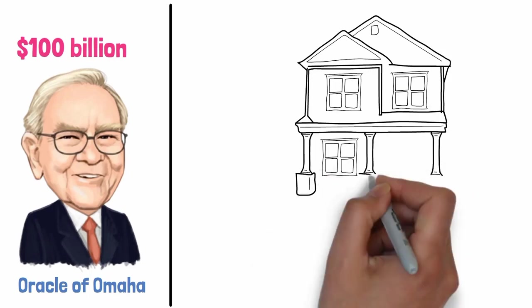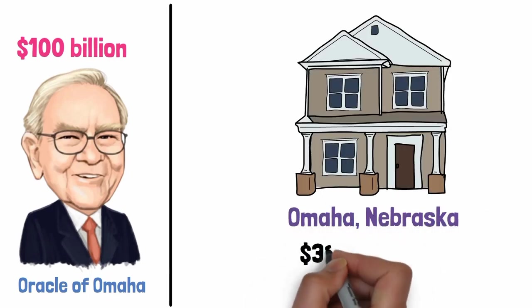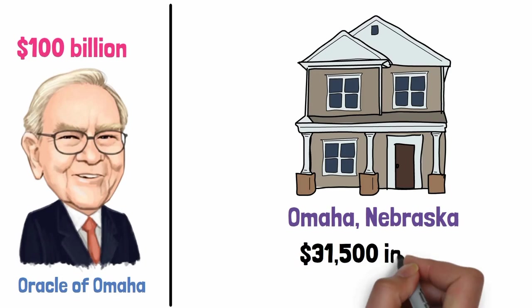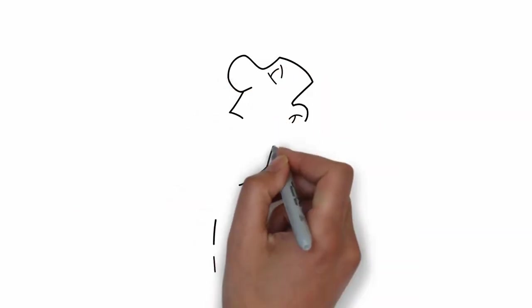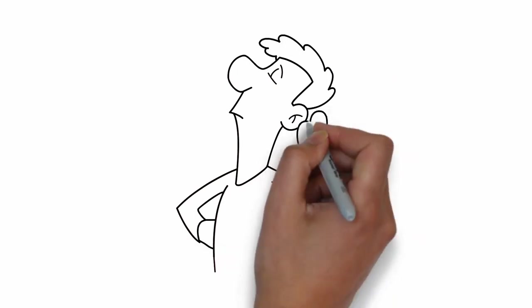He lives in a modest house in Omaha, Nebraska, which he bought for just $31,500 in 1958. Buffett's lifestyle may seem baffling to some, but it's not an isolated incident.